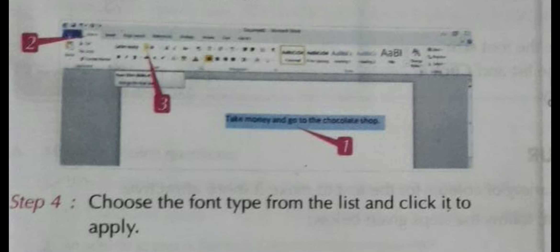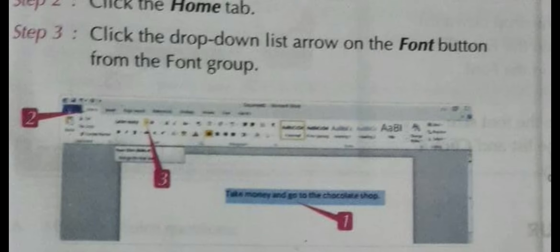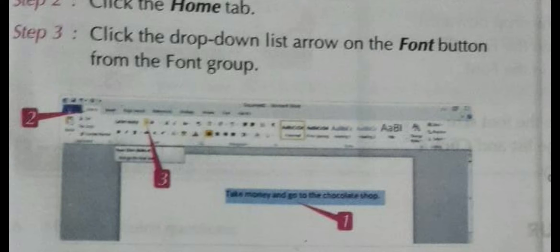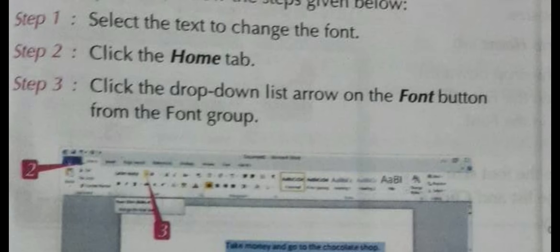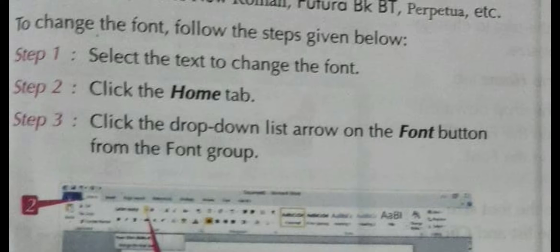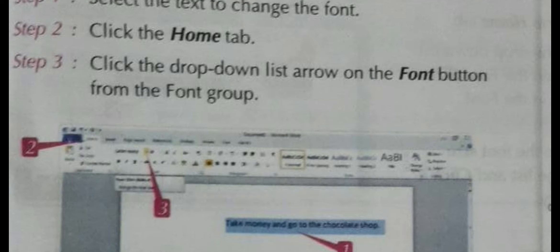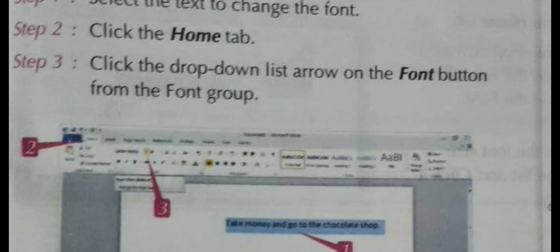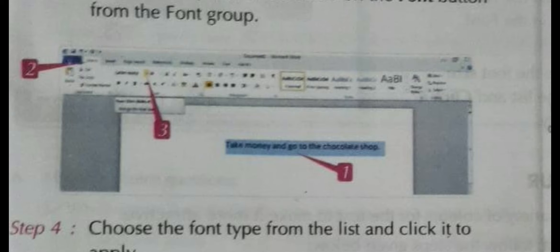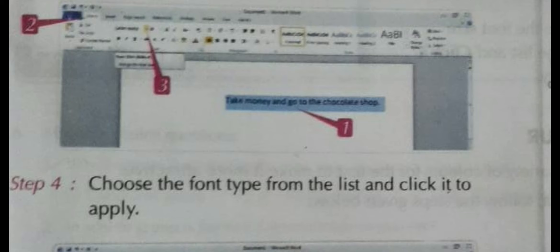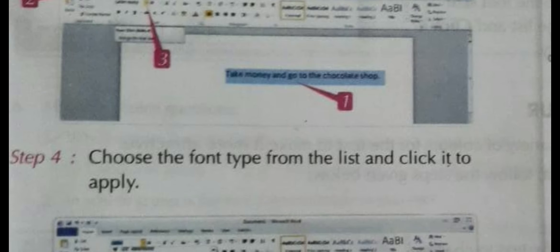To change the font style: click on the Home tab, click the drop-down list arrow on the Font button from the Font group, then choose the font type from the list and click it to apply. While watching the video please open your book to page number 67. In the Home tab go to the Font section — it will show Calibri by default.